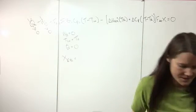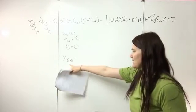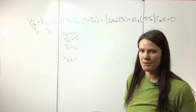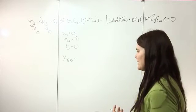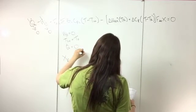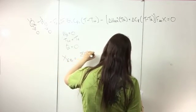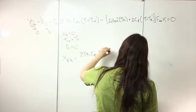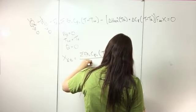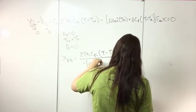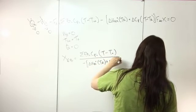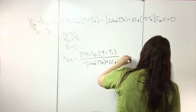The EB stands for energy balance — I want to specify this because we can also calculate conversion from the mole balance. So X_EB is equal to the sum of theta_I C_PI times (T minus T0), over the heat of reaction at some reference temperature plus delta C sub P times (T minus T_R).